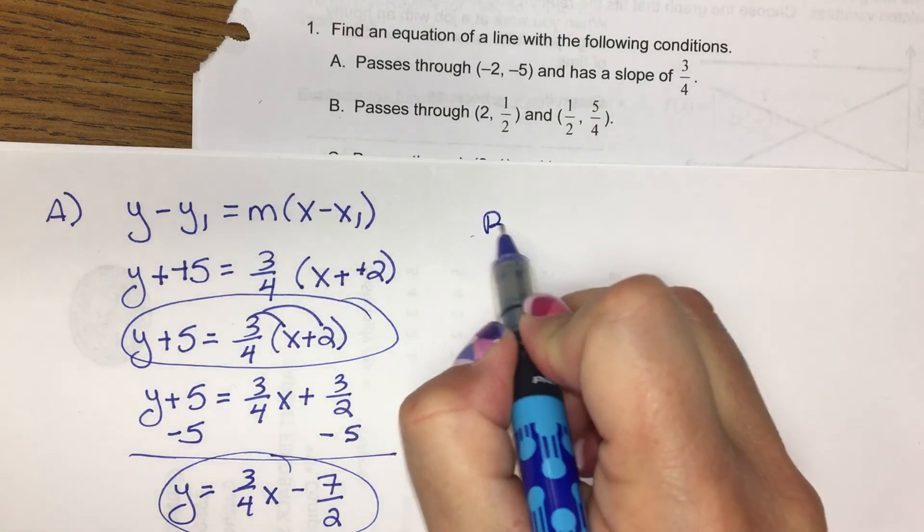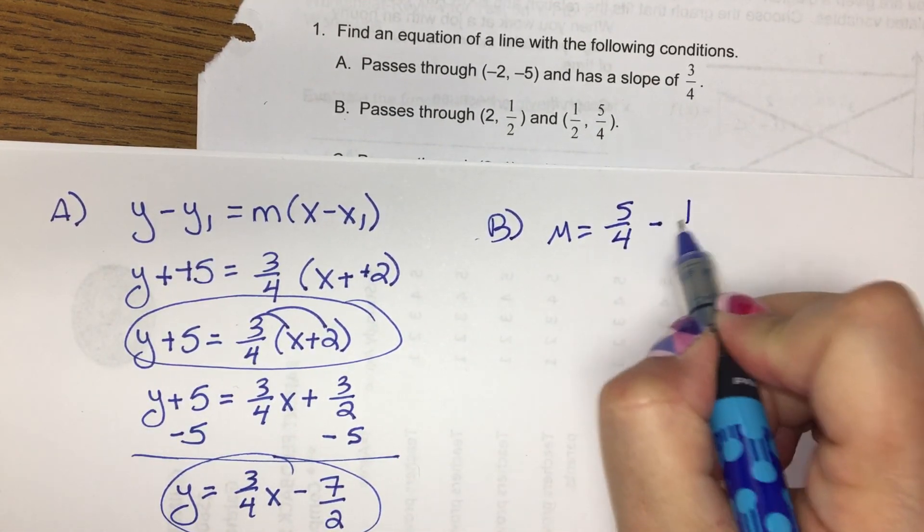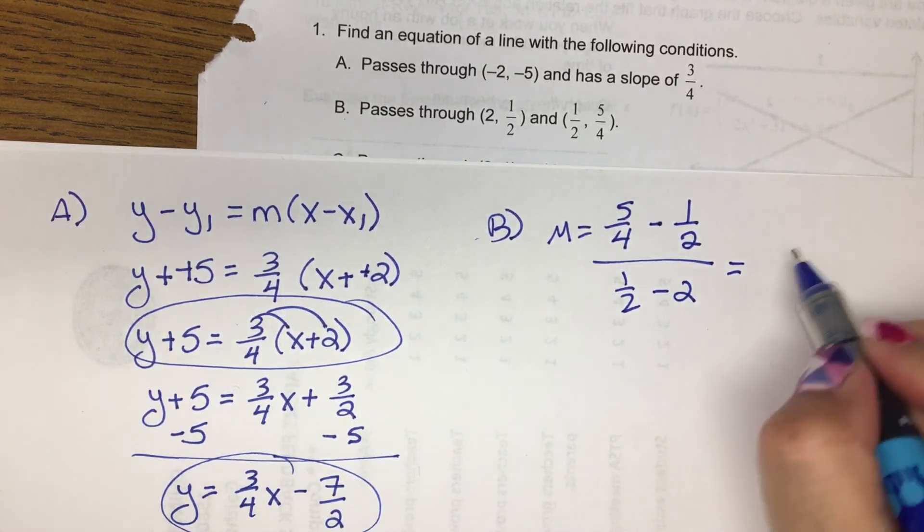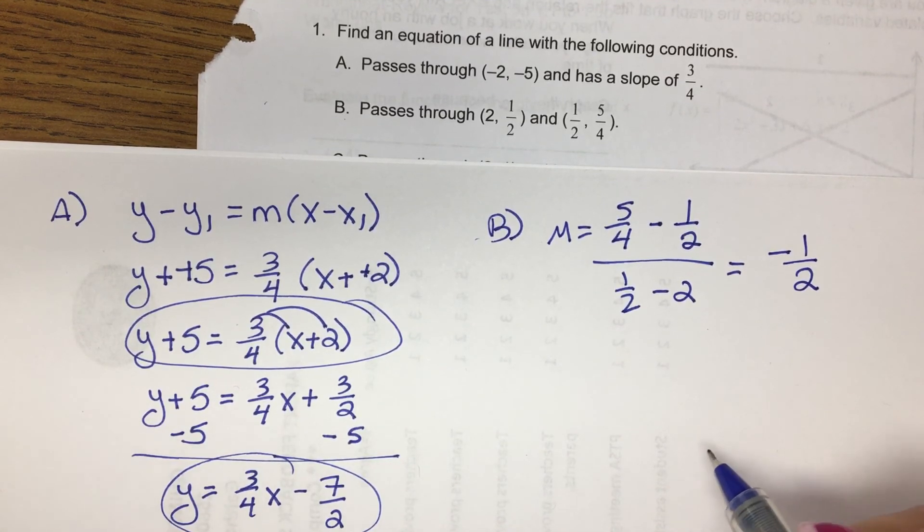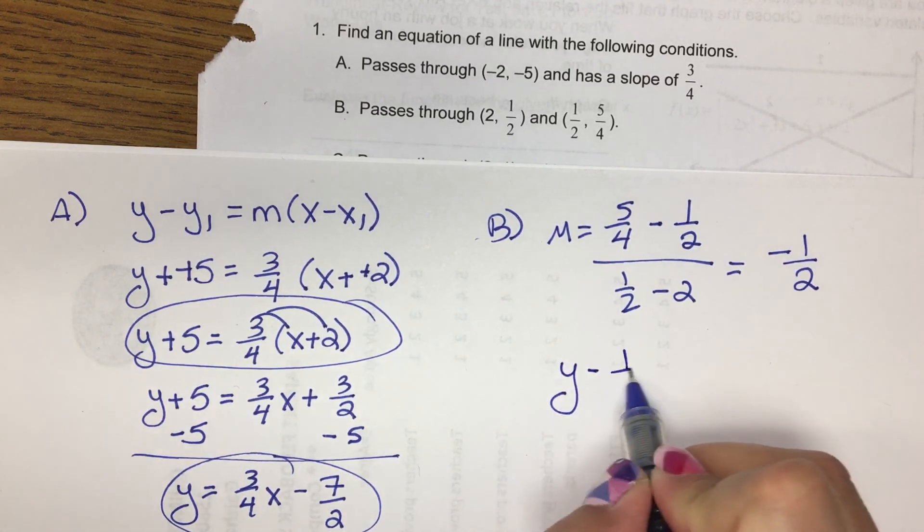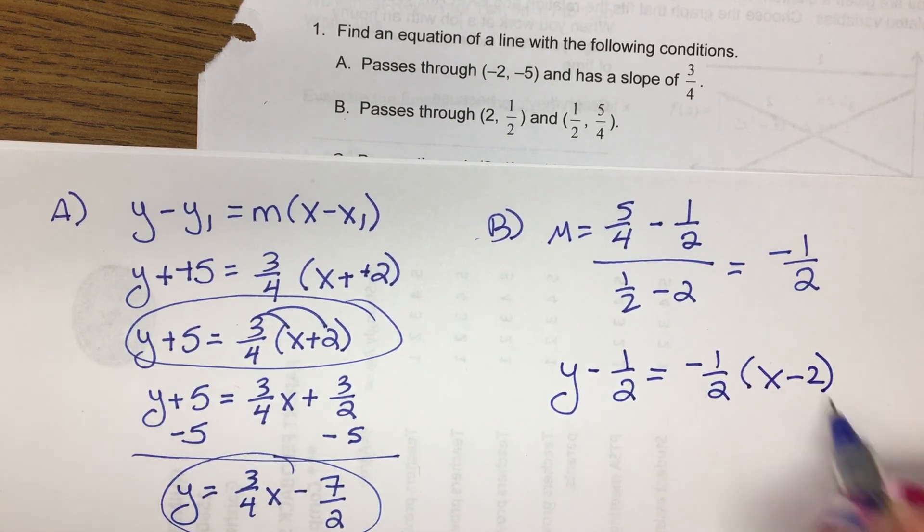For b, I have to calculate the slope. So y2 minus y1 over x2 minus x1. And when you calculate that in your calculator, you get negative 1 half. You can pick any point to use to write your point-slope form. So I'm going to pick the first one. So that is your point-slope form equation. And you can modify it to find slope-intercept.